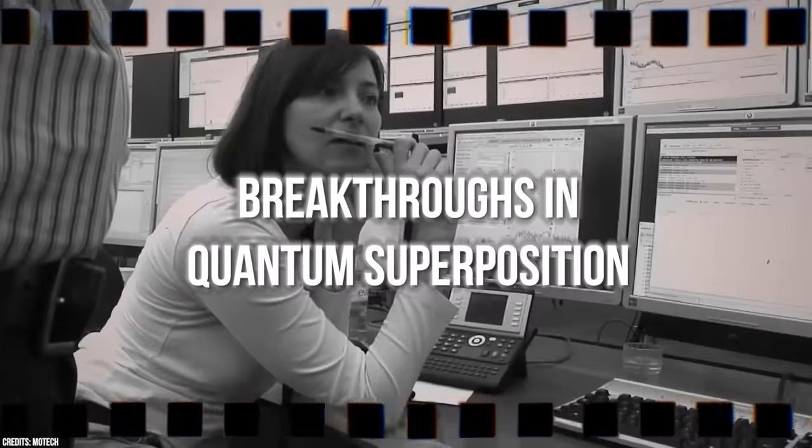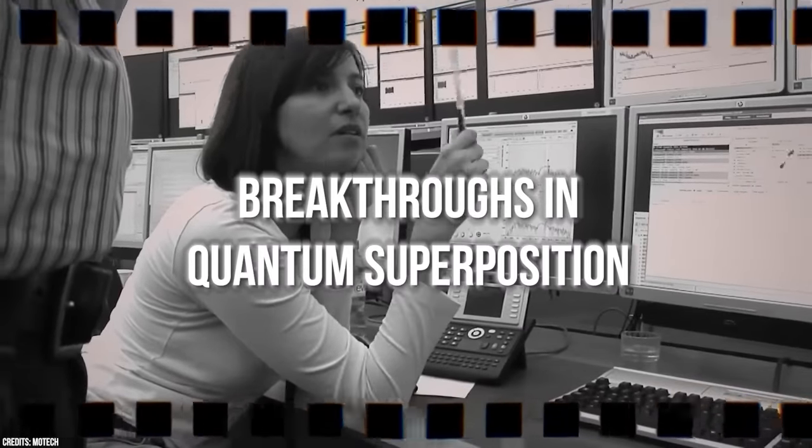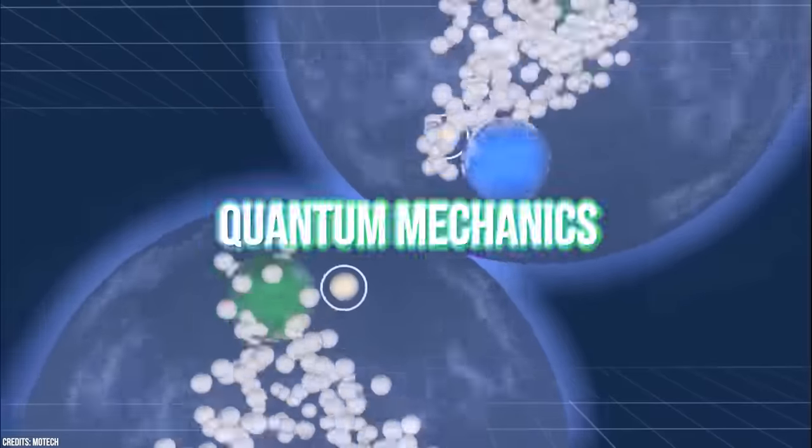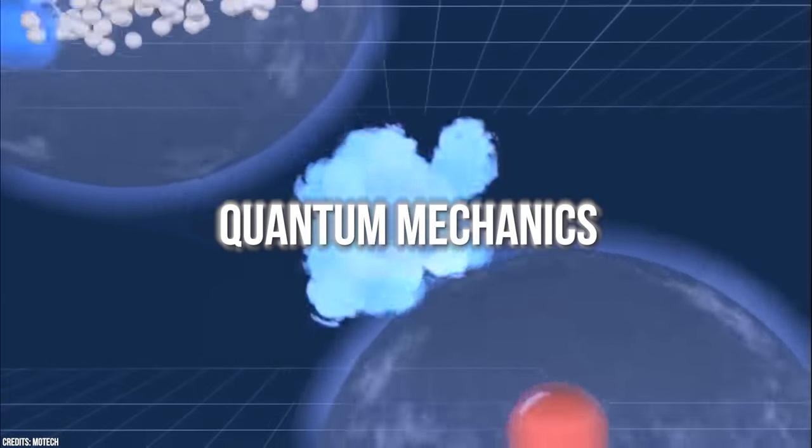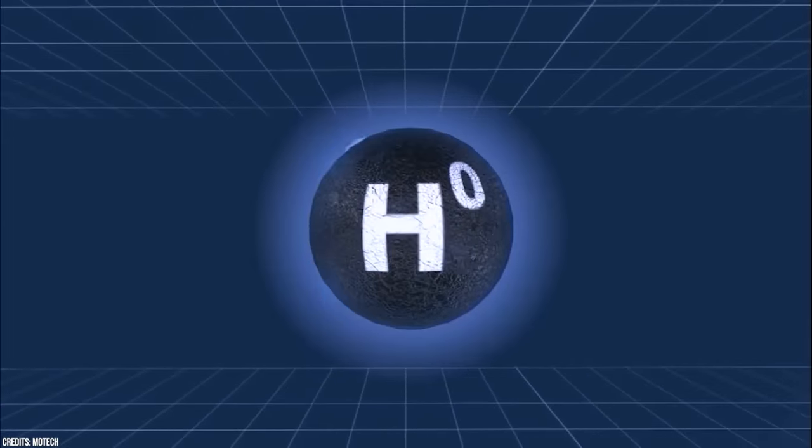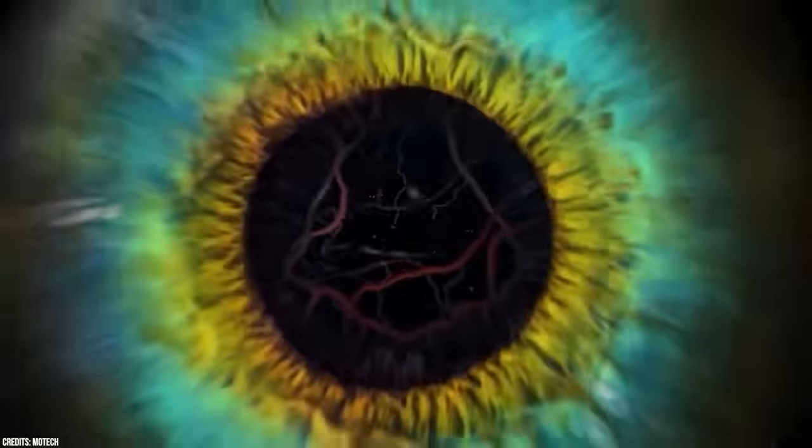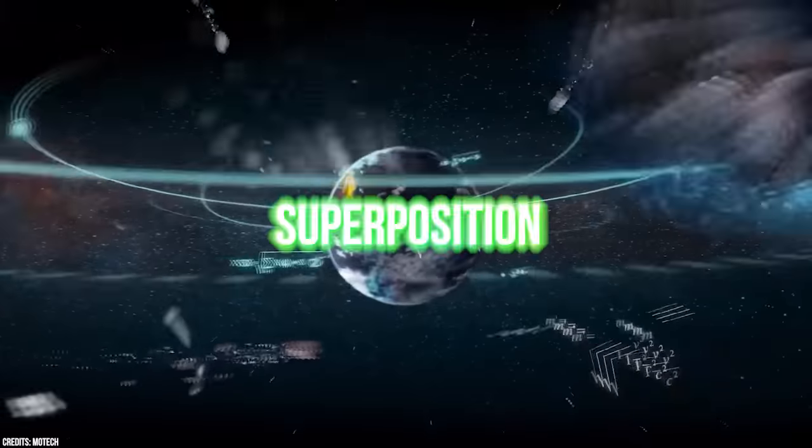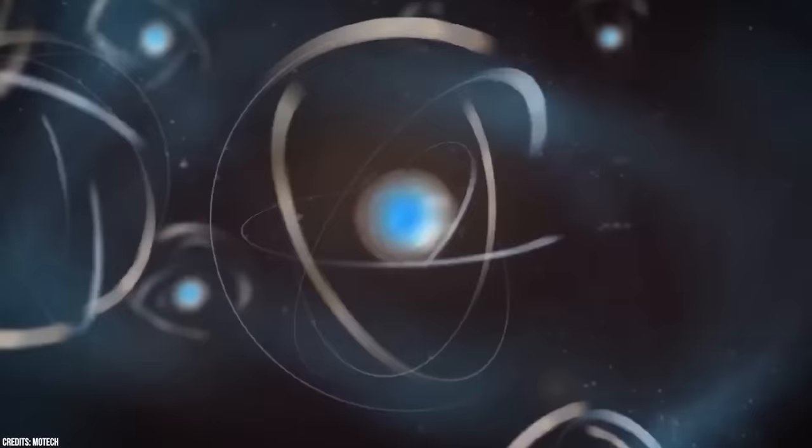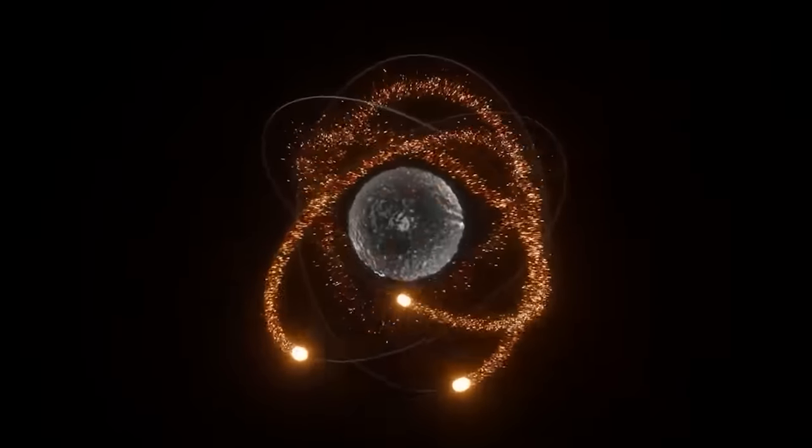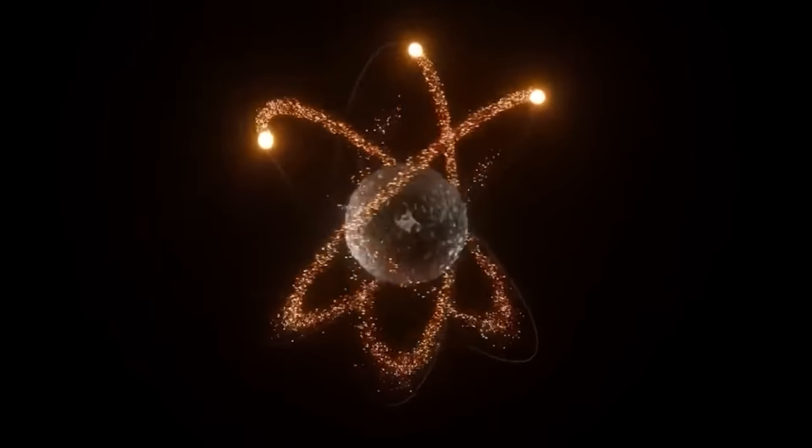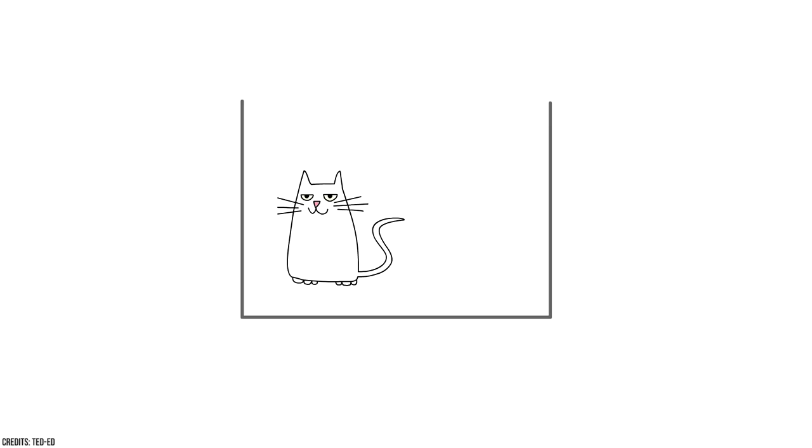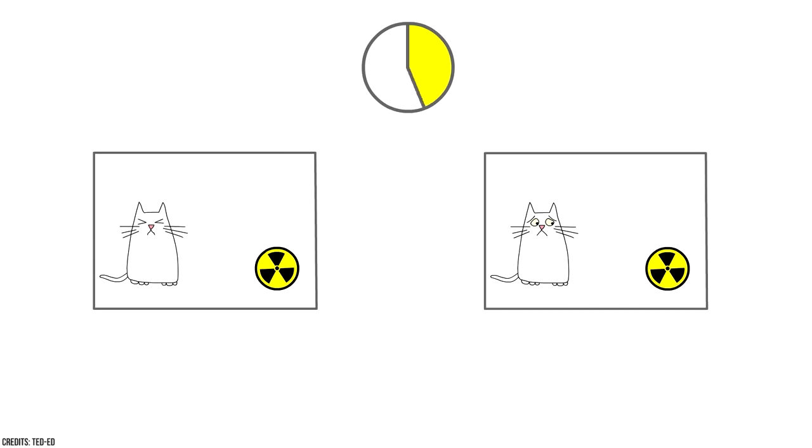Number 1. Breakthroughs in Quantum Superposition. Quantum mechanics, the theory that explains tiny particles' behavior, is famous for its strangeness. One of its puzzling ideas is called superposition. It means that a particle can simultaneously be in more than one state until someone looks at it. A famous example is Schrodinger's cat, which could be alive and dead inside a box until observed.